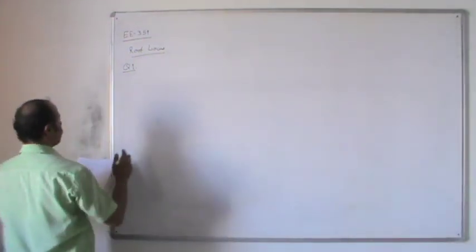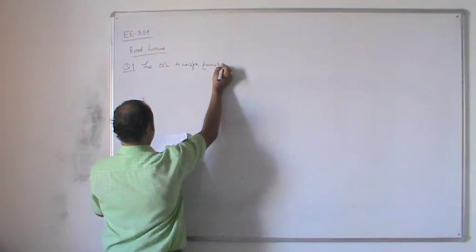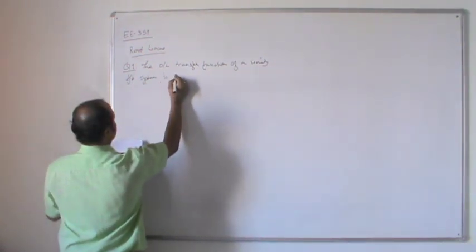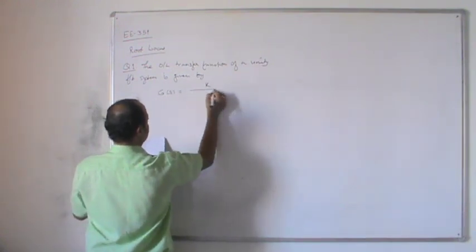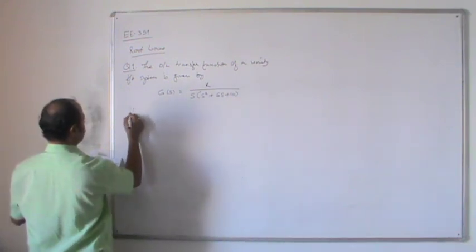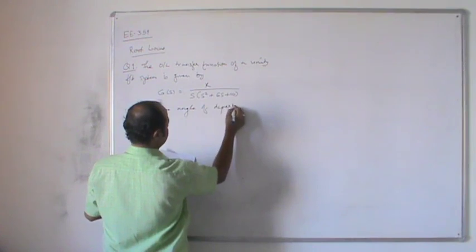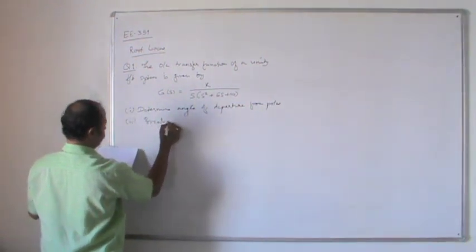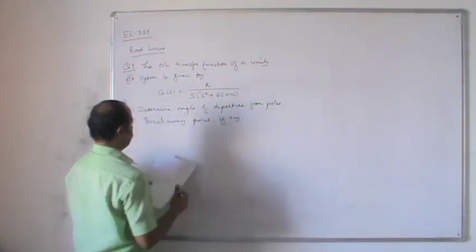Let us consider the open loop transfer function of a unity feedback system given by G(s) = k / [s(s² + 6s + 10)]. The question is to determine the angles of departure from poles, and the breakaway point, if any.